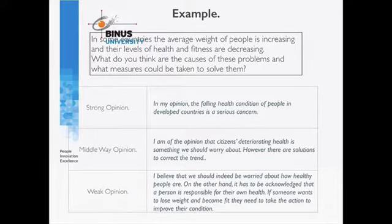An example of a weak opinion: I believe that we should indeed be worried about how healthy people are. On the other hand, it has to be acknowledged that a person is responsible for their own health. If someone wants to lose weight and become fit, they need to take action to improve their condition. You can see that the middle way opinions and the weak opinions are a little bit longer because you need to provide the conditions there.